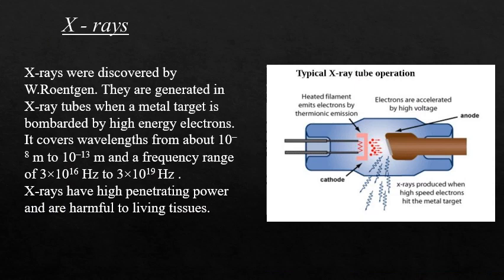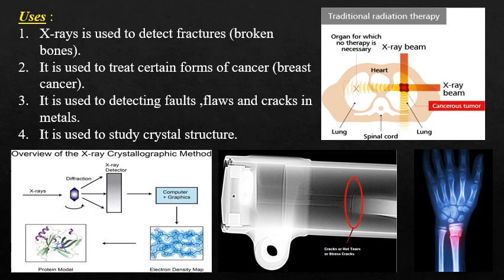X-rays were discovered by W. Röntgen. They are generated in X-ray tubes when a metal target is bombarded by high-energy electrons. X-rays cover a wavelength range of about 10⁻⁸ m to 10⁻¹³ m and a frequency range of 3 × 10¹⁶ Hz to 3 × 10¹⁹ Hz. X-rays have high penetrating power and are harmful to living tissues. Uses include detection of fractures, treatment of certain forms of cancer, detecting flaws and cracks in metals and heavy machines, and the study of crystal structure.